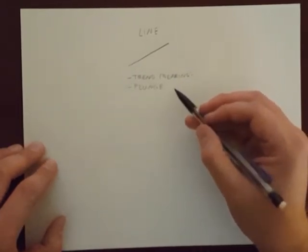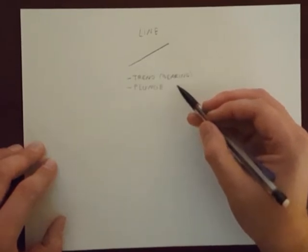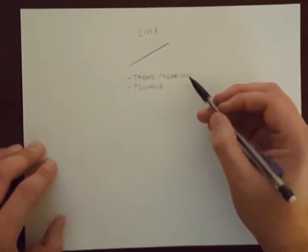Plunge is how much the line tilts from horizontal, while trend is the direction toward which it is plunging.